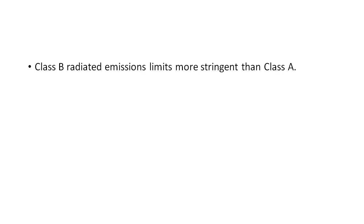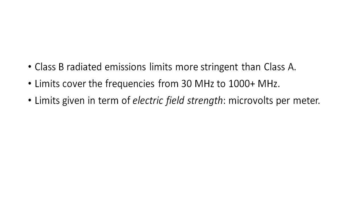Also same as before, the limits on radiated emissions for class B devices are more stringent than those of class A devices. Radiated emissions limits are specified for frequencies from 30 MHz up to above 1000 MHz, or 1 GHz. The FCC divides this range into four different bands, and they give their limits in microvolts per meter, as opposed to dB microvolts per meter.